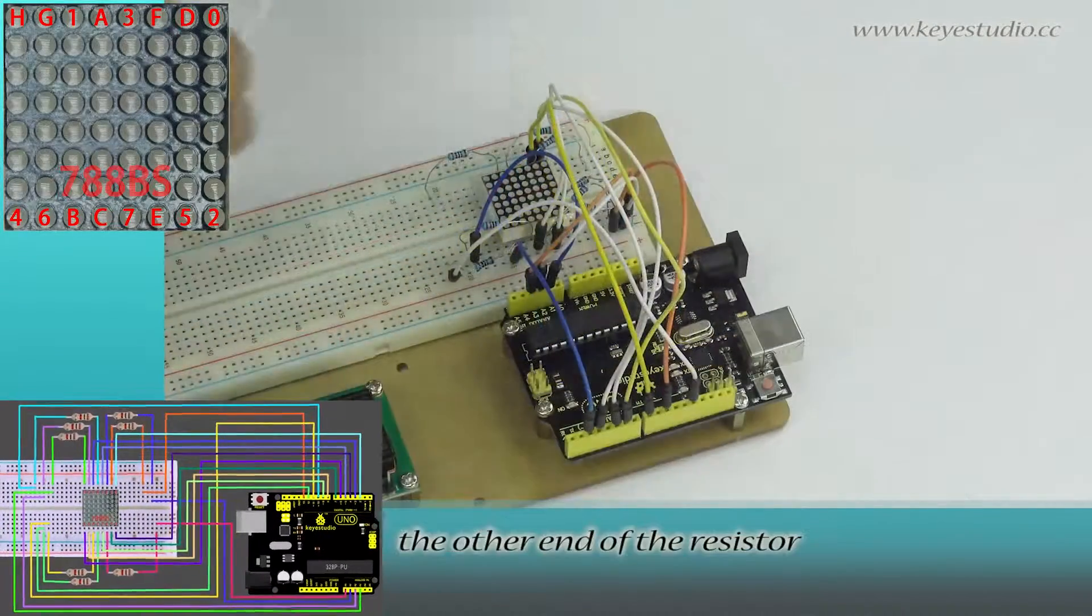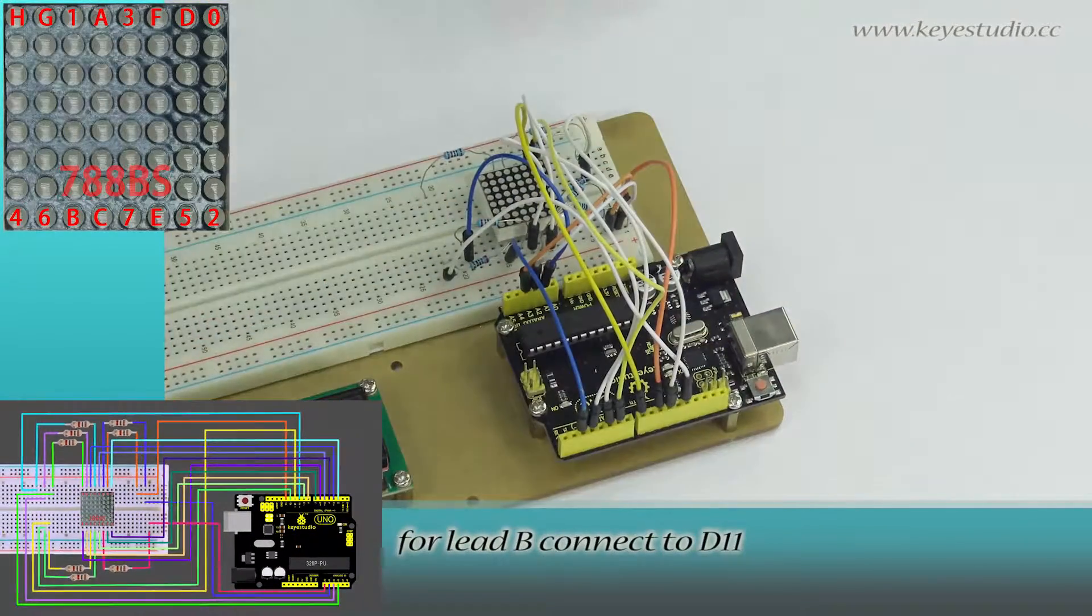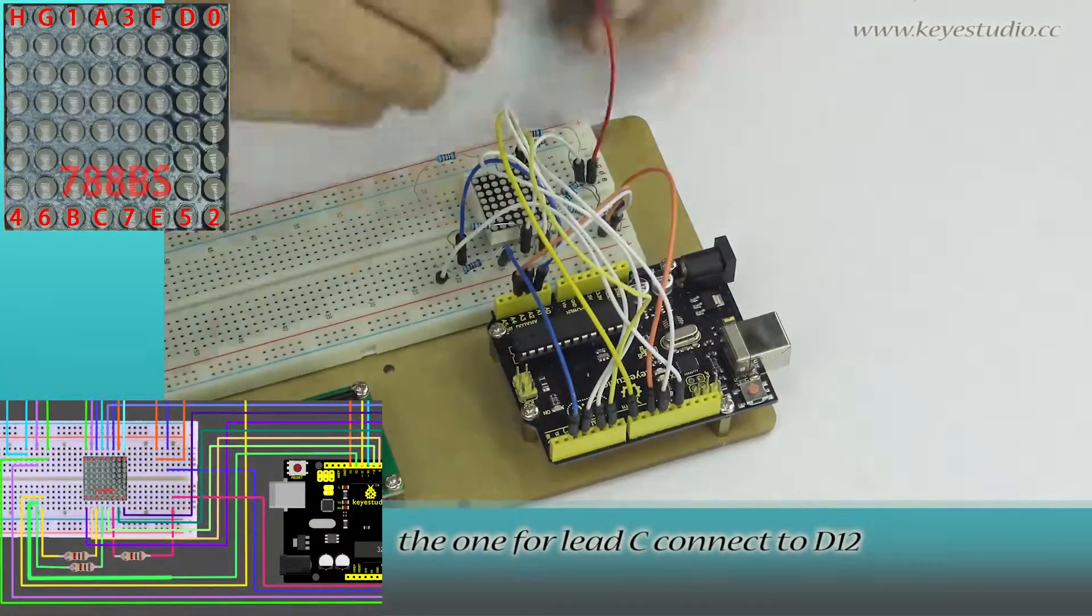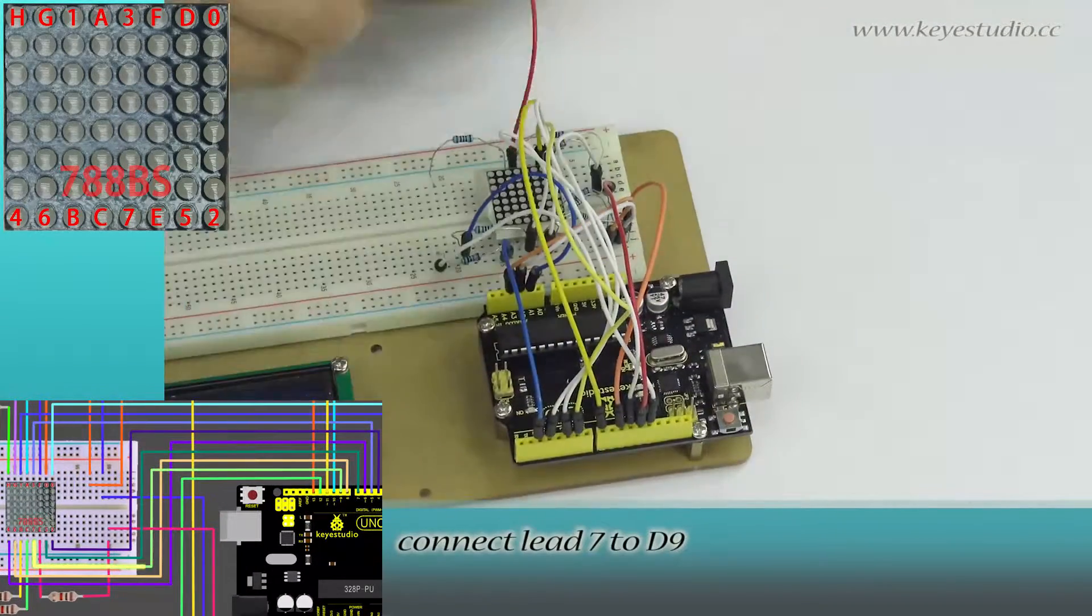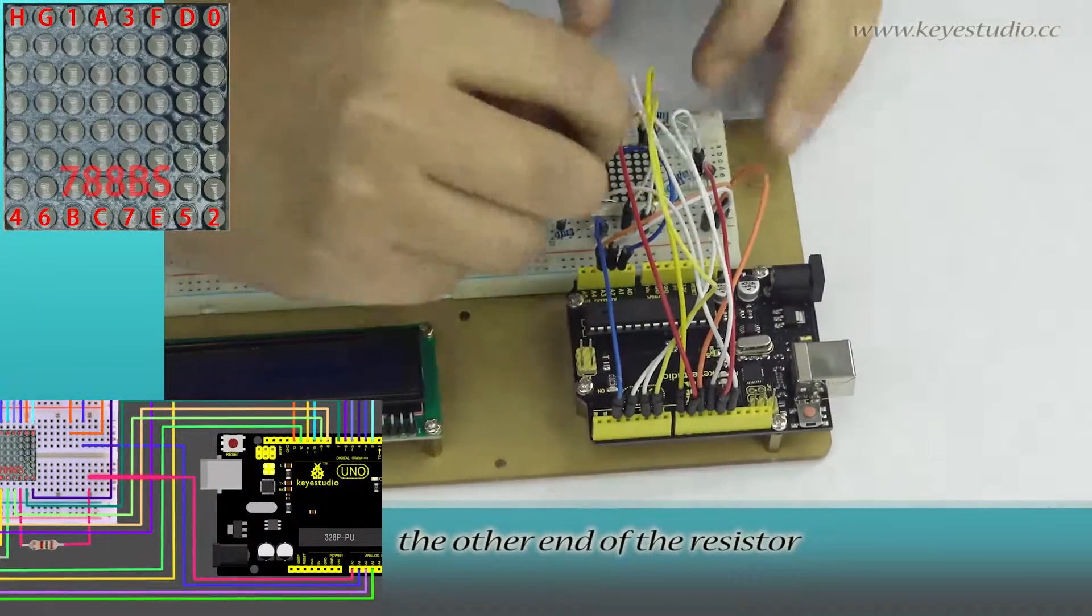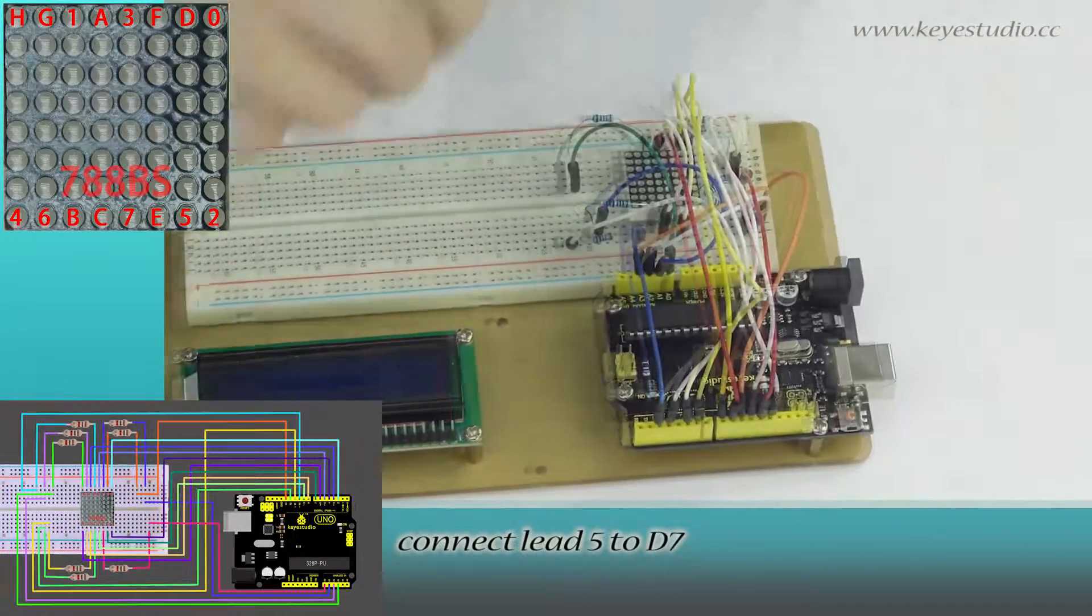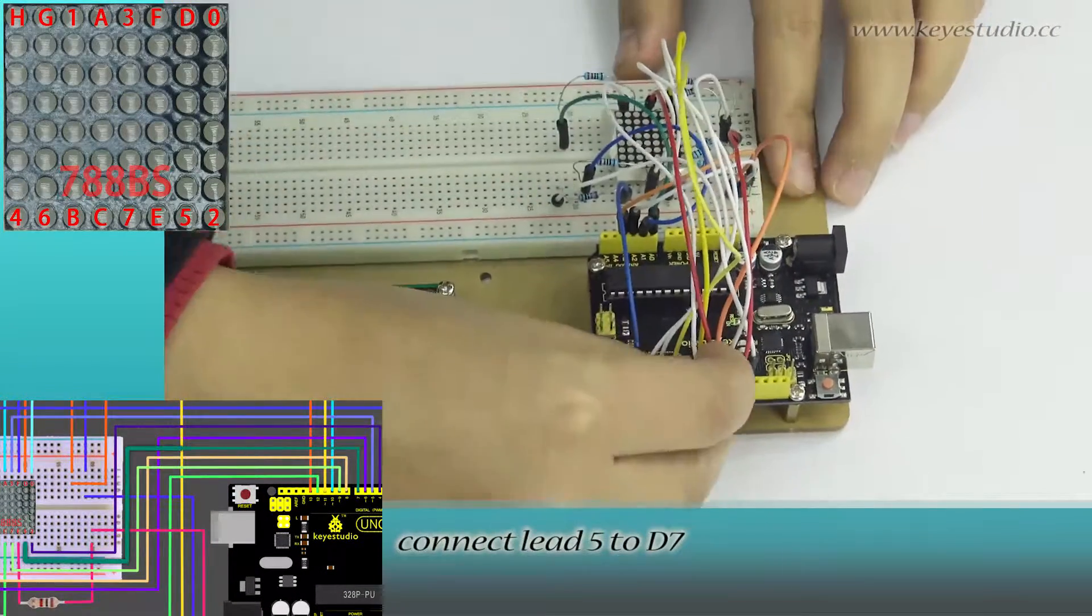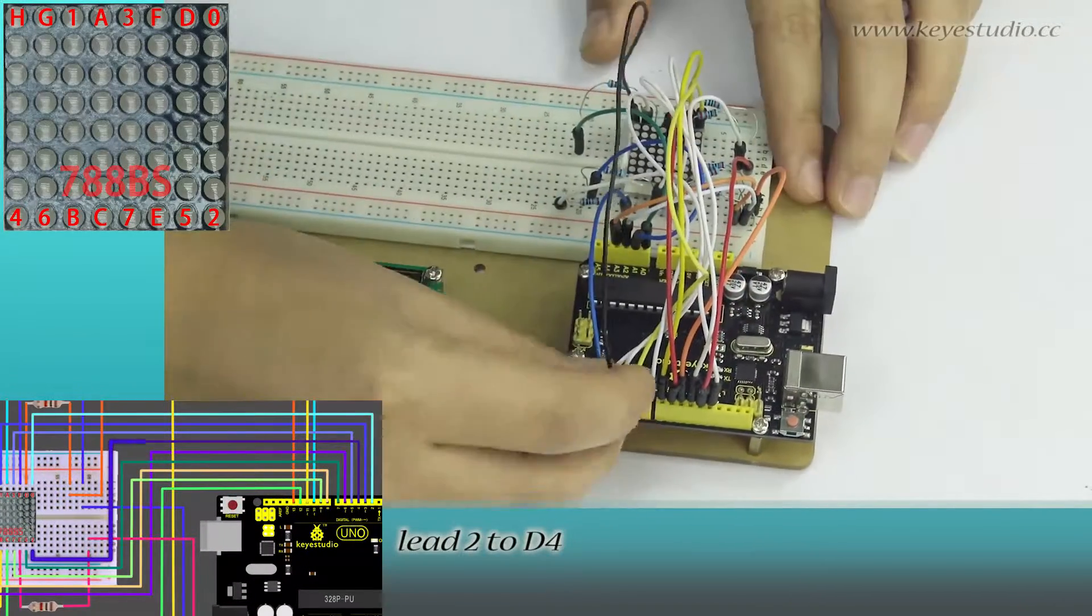The other end of the resistor for lead D connects lead E to A0. Connect lead 5 to D7. Connect lead 2 to D4.